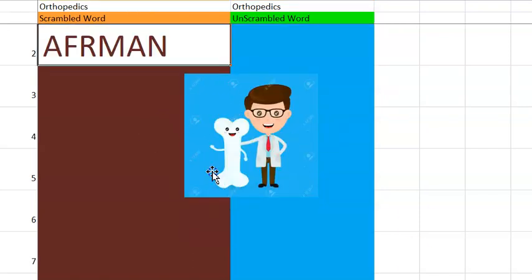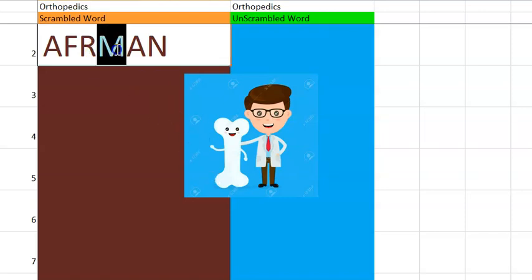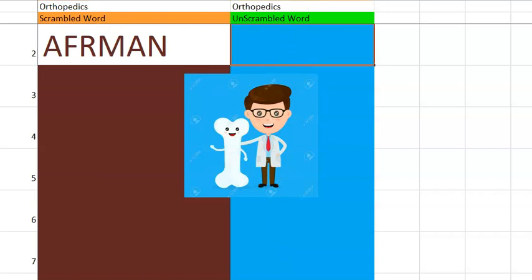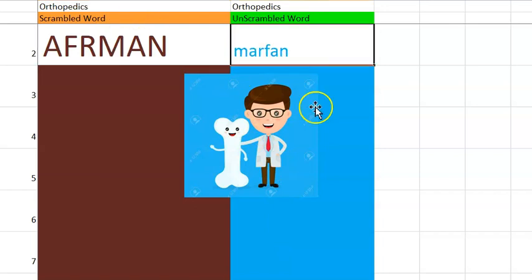What do you think this one is? It's the name of a syndrome where there will be connective tissue disorder that can have some problems with the aorta, starts with M. Very good. Marfan's syndrome.